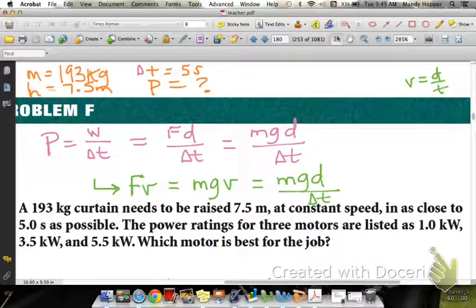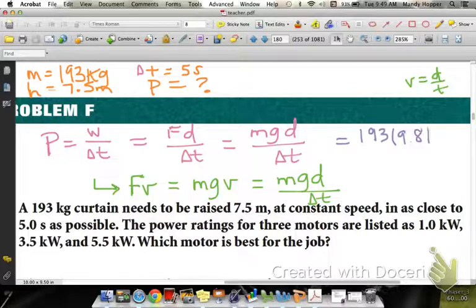It doesn't matter which of these that you decide to go through. Start plugging in your numbers. Mass is 193 kg. Do we need to leave that as kilograms? Yes. Let's see here gravity 9.81, distance what is distance, the 7.5 meters.